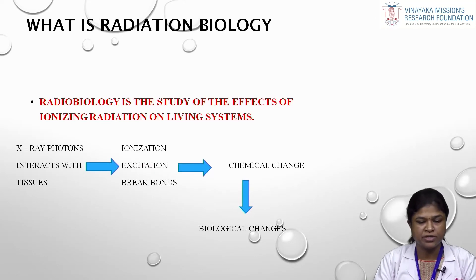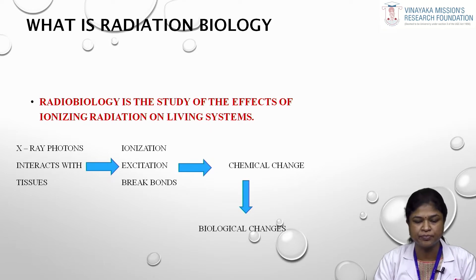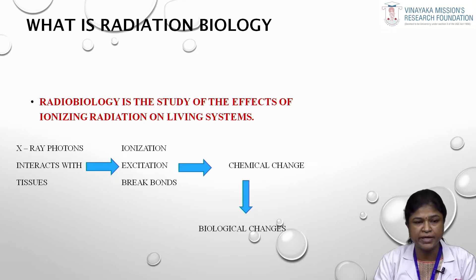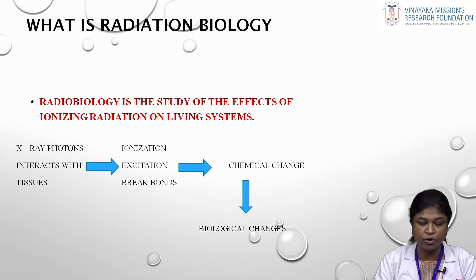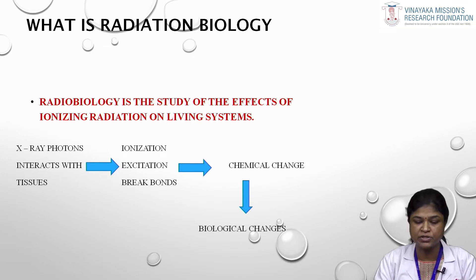Radiation biology is the study of the effects of ionizing radiation on the living system. Radiation produces changes at the cellular level which could be analyzed within 10 to the power of minus 13 seconds. X-ray photons, when they interact with tissues, can either cause ionization, excitation, or breakage of bonds, which could lead to chemical changes and finally biological change.